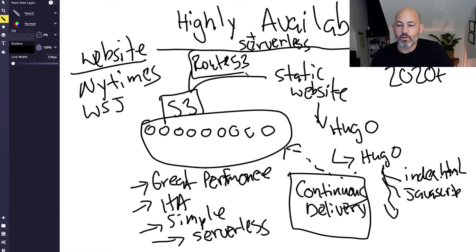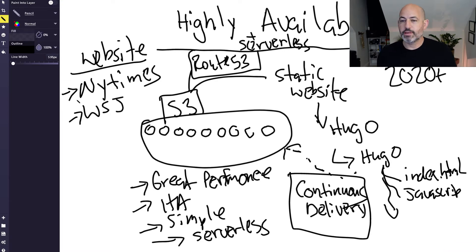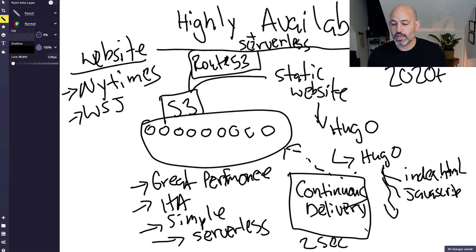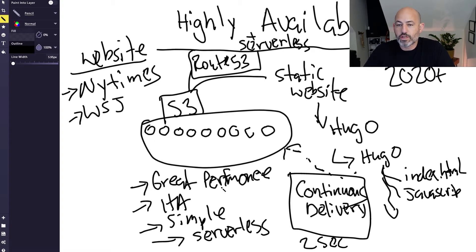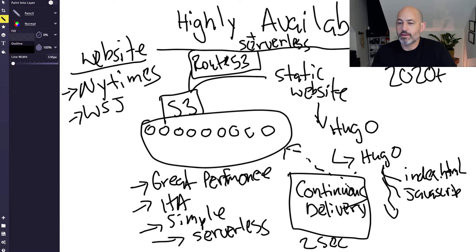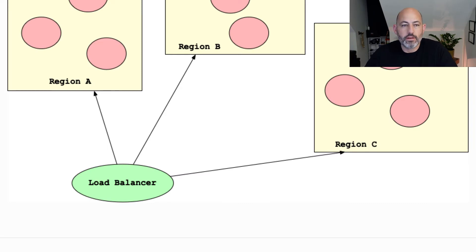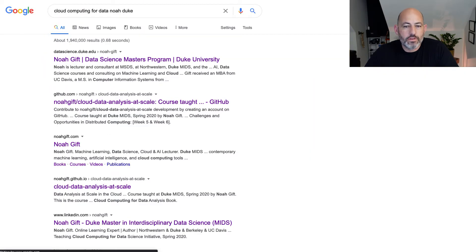Cloud platforms have solved this completely — they provide bucket-based hosting and DNS via Route 53. It's now a trivial problem; you can build something that could scale to the whole world, and deployment of changes and new articles can take just two seconds. This is a tremendous offering. I think mastering the static web server with continuous delivery using the cloud-native platform — in AWS's case, AWS CodePipeline and AWS CodeDeploy — really captures the essence of cloud computing.